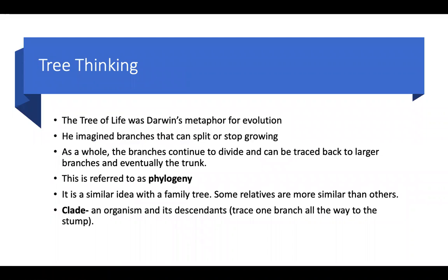The tree of life was Darwin's metaphor for evolution. He envisioned evolution to be like a tree — you just follow the branches and they become more and more numerous. One branch will branch out to a bunch of other branches. Sometimes they get terminated, sometimes you'll find a lot of branches growing off one branch, sometimes only a few. This is essentially phylogeny.